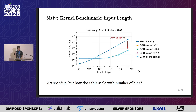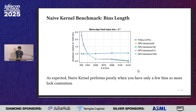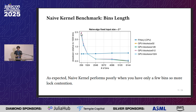But what happens when we change the number of bins? Here's how the speed slows down — higher means more slowdown — as a function of histogram bin count. If we go down to about 250 bins from 1,000, we have about a 2.5 times slowdown, which is not negligible. This is what you expect from a naive kernel: the smaller the number of bins, the more lock contention there will be.